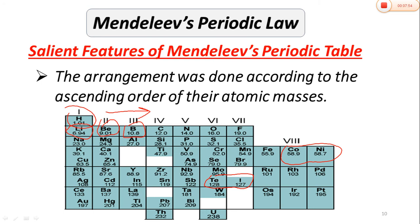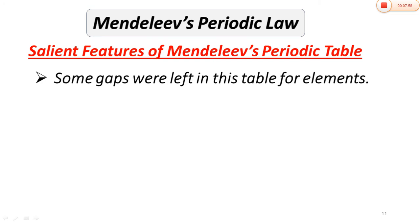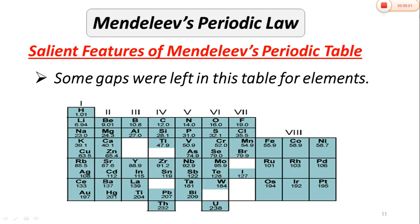Some gaps were left in this table for elements yet to be discovered. As I showed you in the periodic table, here is a gap, and here is a gap — there is no element placed in those positions. The properties of the elements that should fill these gaps were predicted. For each gap, the expected properties of the missing element were defined.